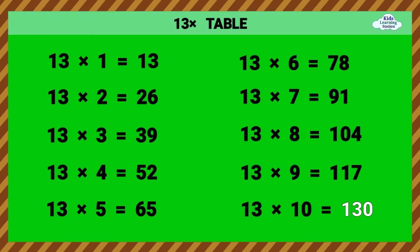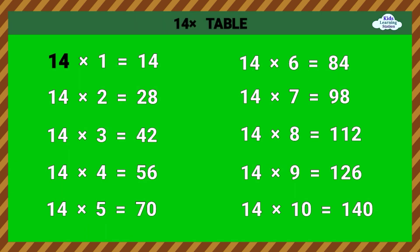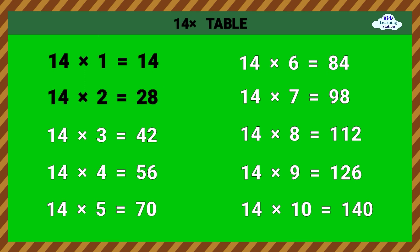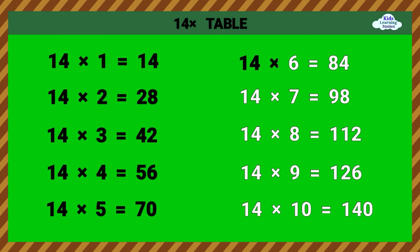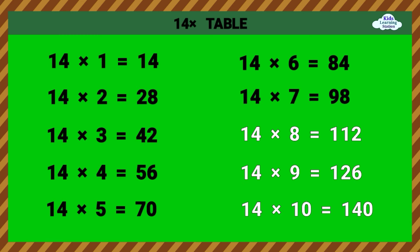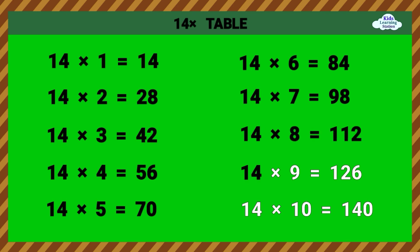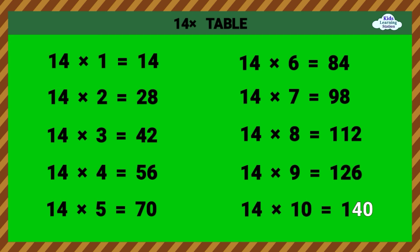13 times 10 equals 130. Fourteen Times Table. 14 times 1 equals 14. 14 times 2 equals 28. 14 times 3 equals 42. 14 times 4 equals 56. 14 times 5 equals 70. 14 times 6 equals 84. 14 times 7 equals 98. 14 times 8 equals 112. 14 times 9 equals 126. 14 times 10 equals 140.